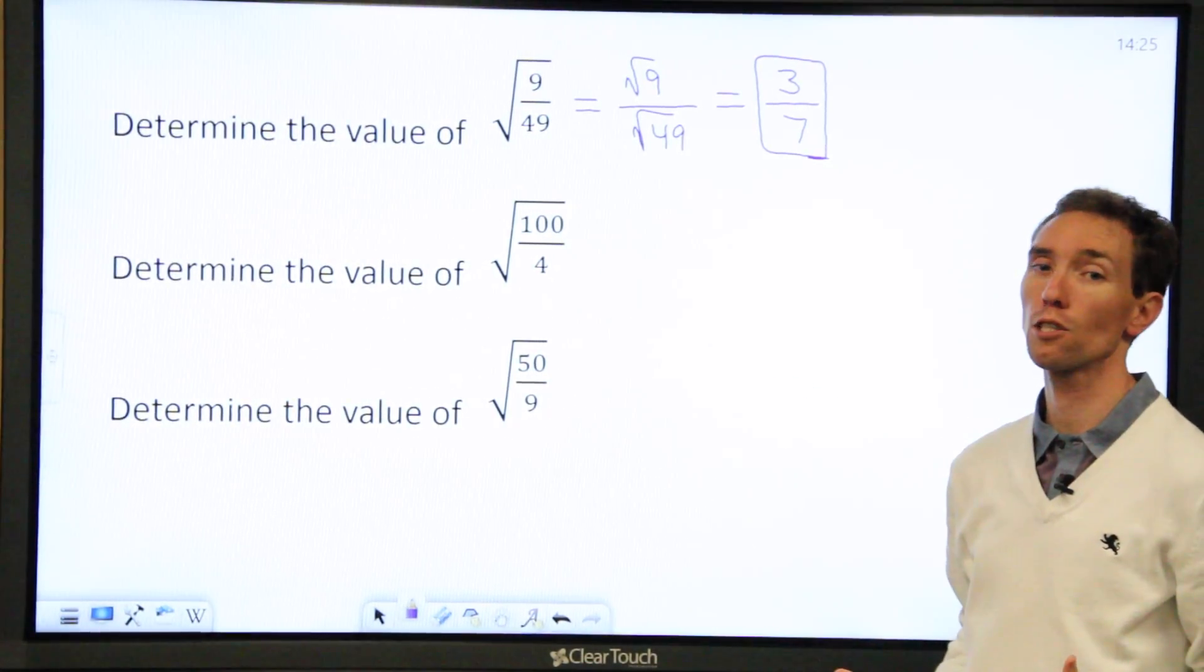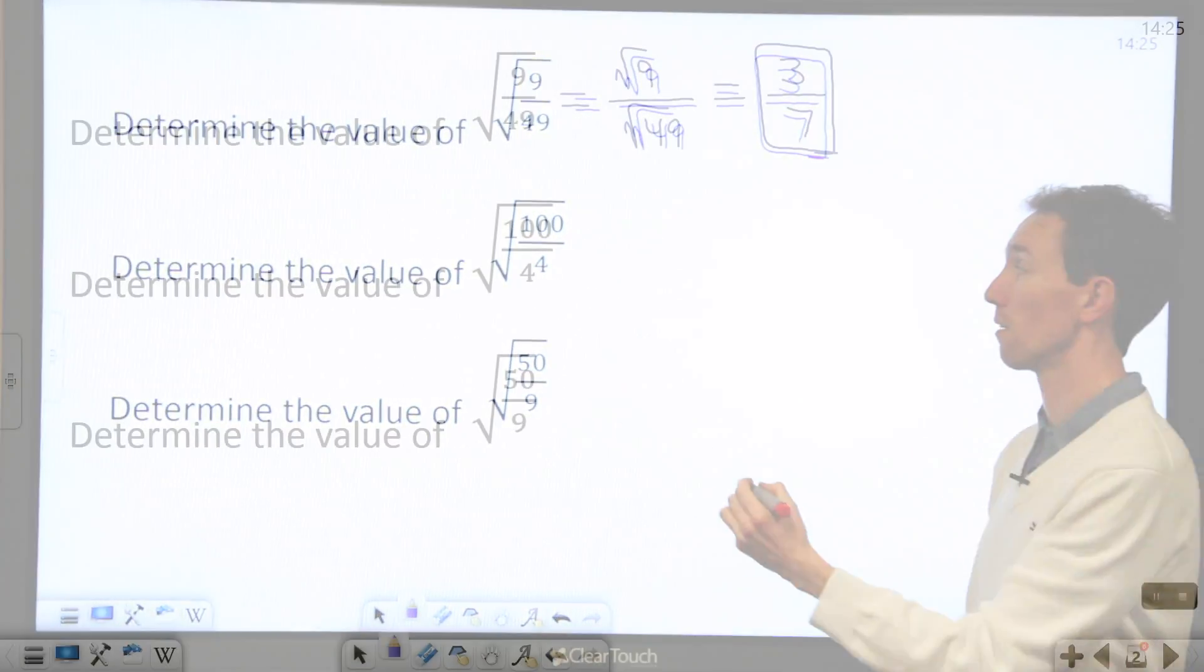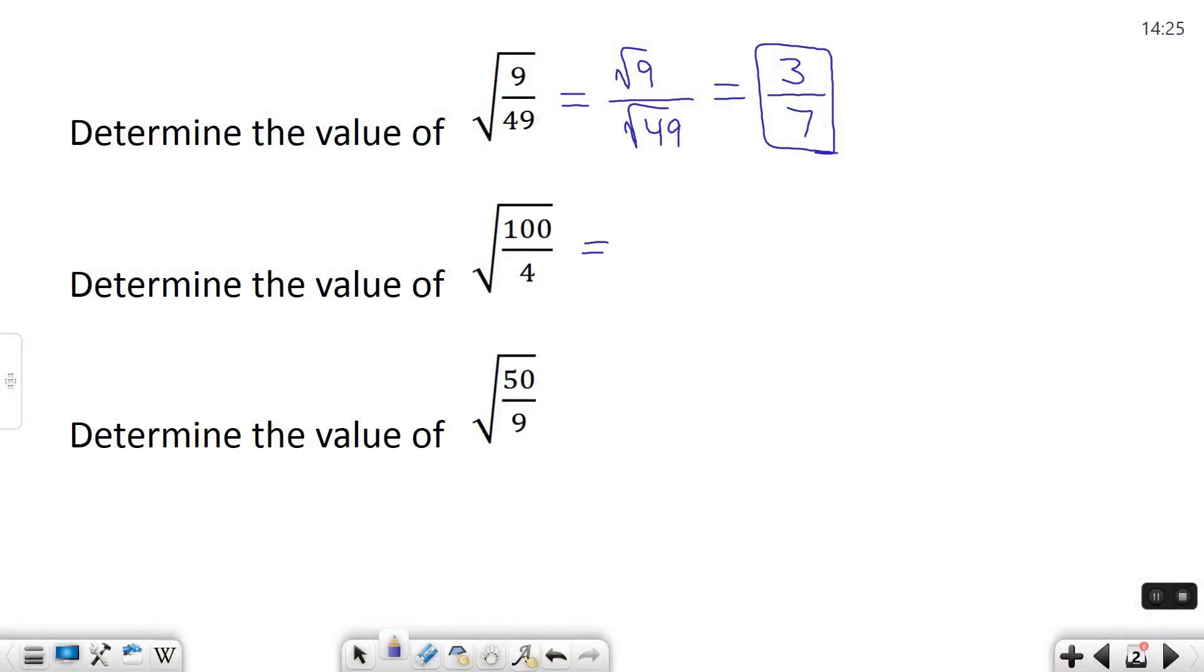100 divided by 4 is 25. So really, this question is asking me what's the square root of 25. So I'm going to write that. Well, I know the square root of 25 is 5. So there's my answer.